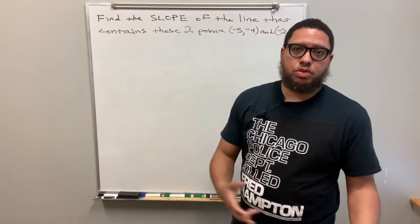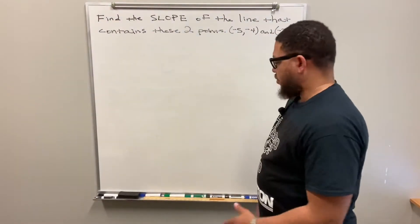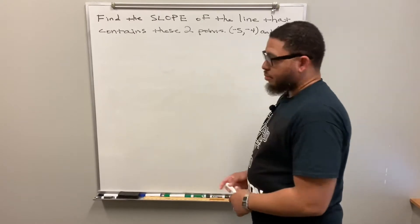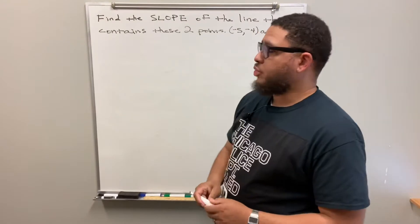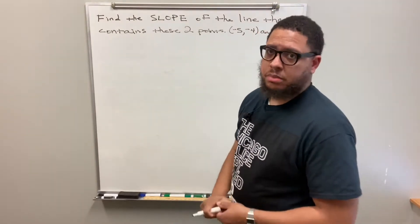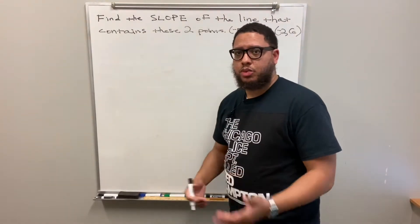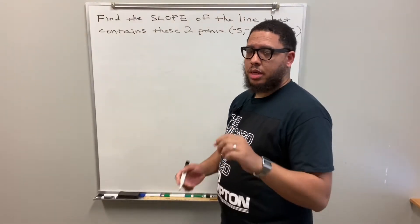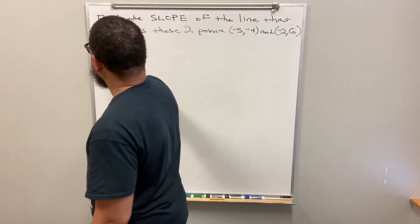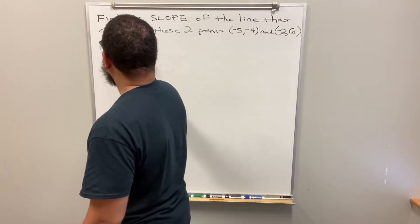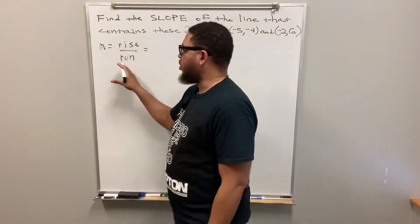Today we're going to be working on how to calculate slope when you're given two points on a line. The first thing I want to do is write down the formula for slope. Slope is represented by the lowercase letter M. In the slope-intercept formula, y = mx + b, that M is equal to the rise divided by the run.